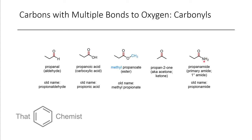Moving beyond oxygen-containing derivatives, it's possible to have more complex sulfur-containing derivatives. You probably won't encounter these too much early in your organic chemistry experience, but it's useful to identify them early. If we have a sulfur with two S=O groups and an OH, that's a sulfonic acid. If we only have one S=O, it's a sulfinic acid. If instead of an OH we have an R group, that's a sulfone, and with just one S=O that's a sulfoxide. It's also possible to have sulfonamides.